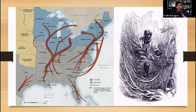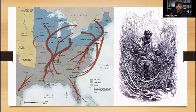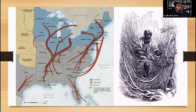So that journey toward freedom wasn't just going north — it was also going south. The image you see to the right is a famous image of a person known as Osmond the Maroon. The term maroon is not referring to color. Maroon comes from the Spanish word 'cimarrón,' which means rebel or unruly. These were a segment of the enslaved population who would escape plantations and build communities in very difficult or hard-to-reach territory, such as swamps.